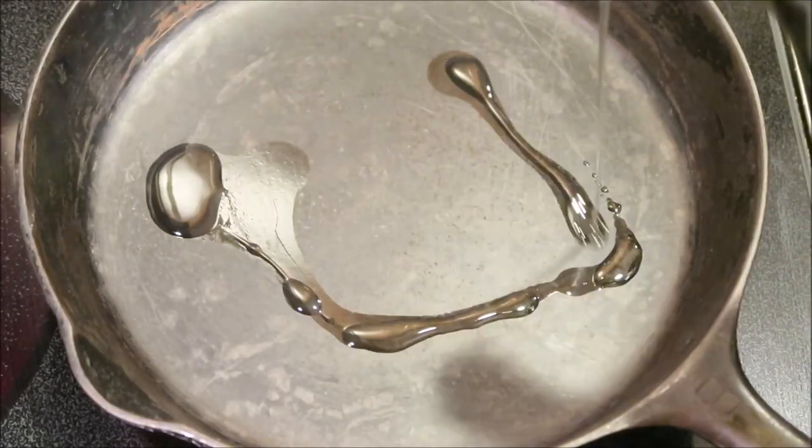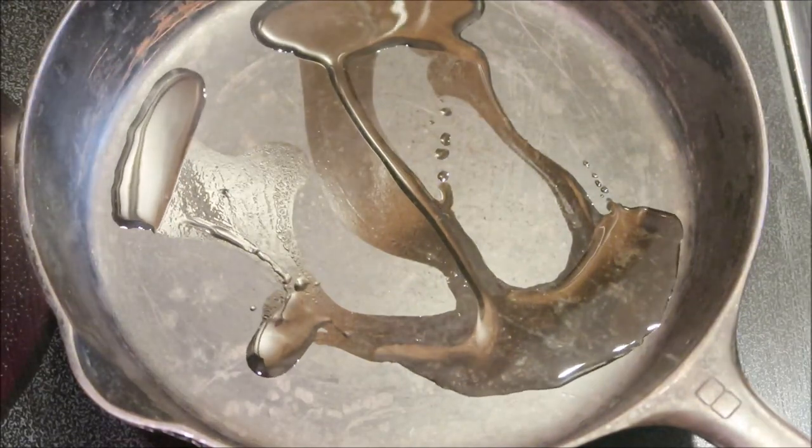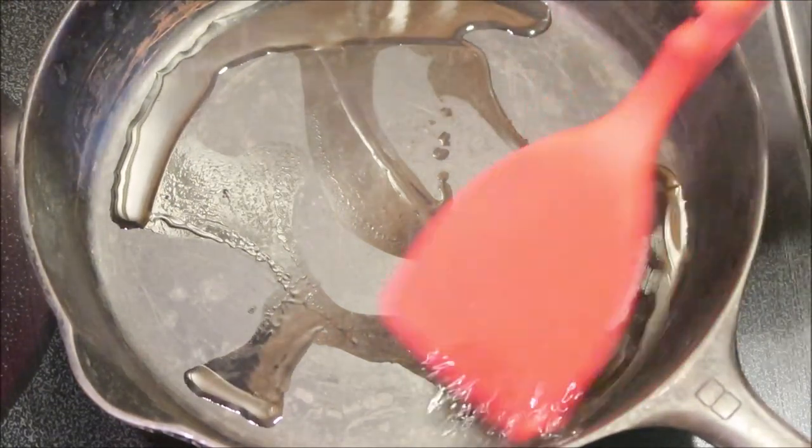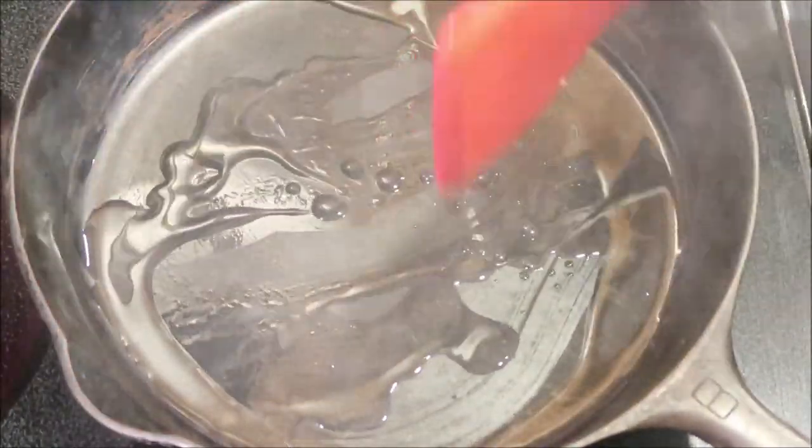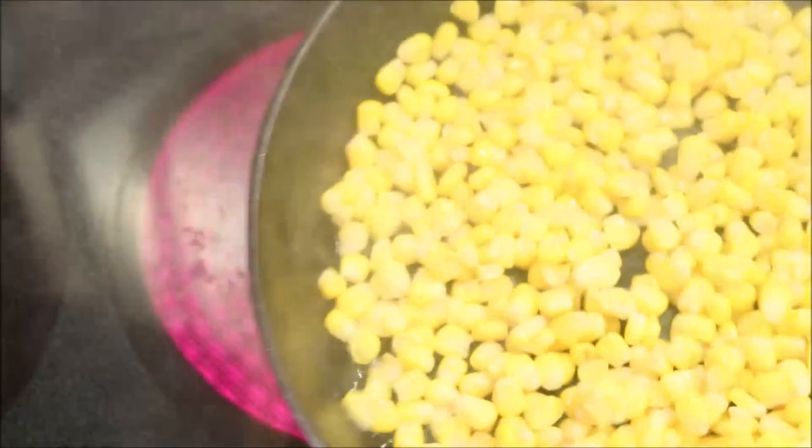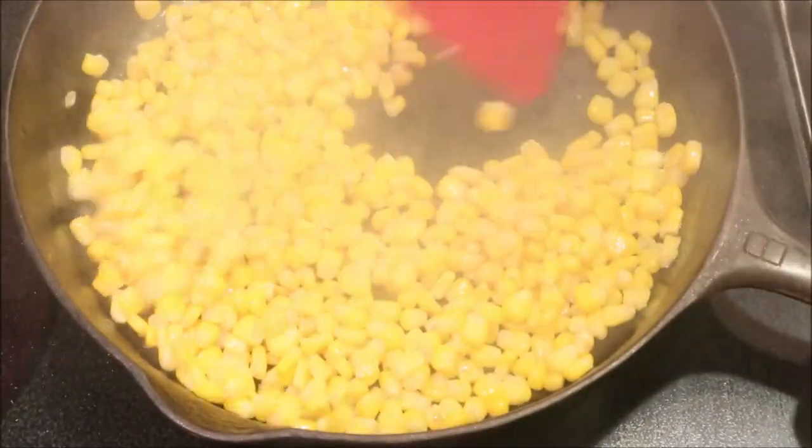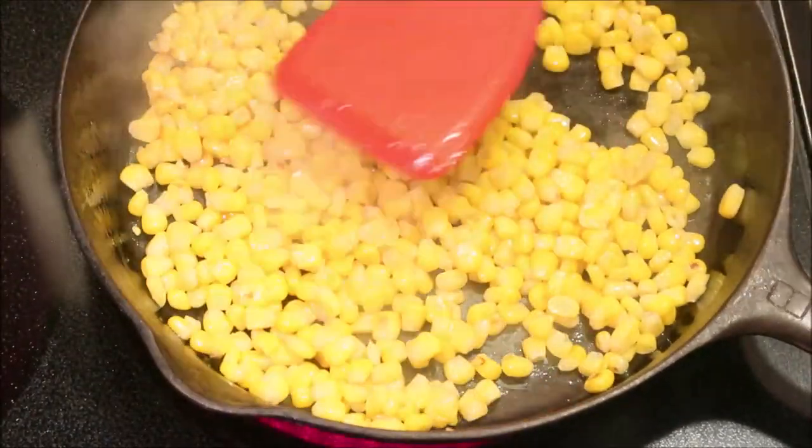This recipe calls for corn. You can use fresh or frozen. I'm using frozen corn from Sam's Club - it tastes so fresh. I just put a little avocado oil in here. This step isn't required in the recipe, but I like to roast the corn to get it a little charred. We don't want it to burn, just get a little color on it.